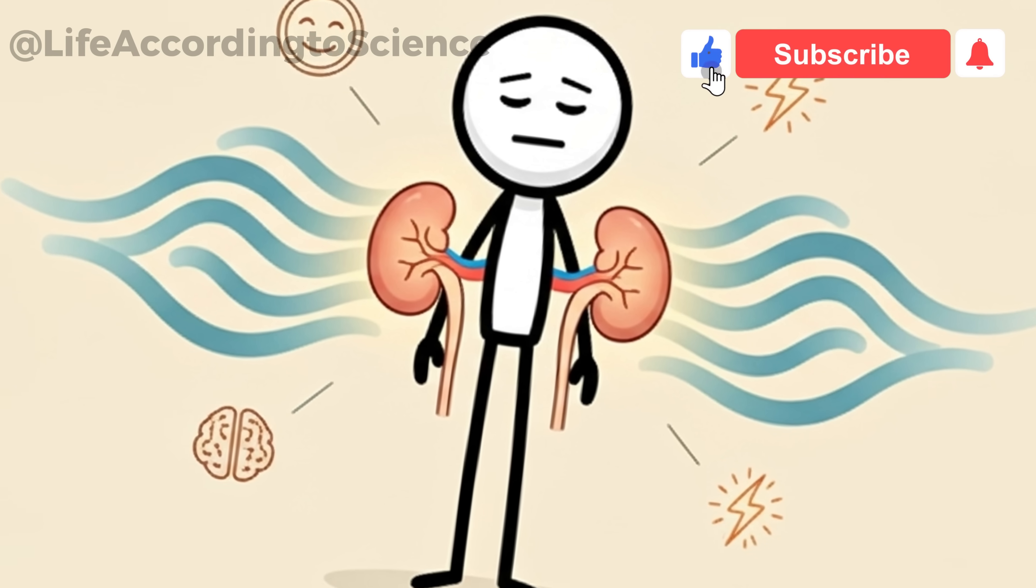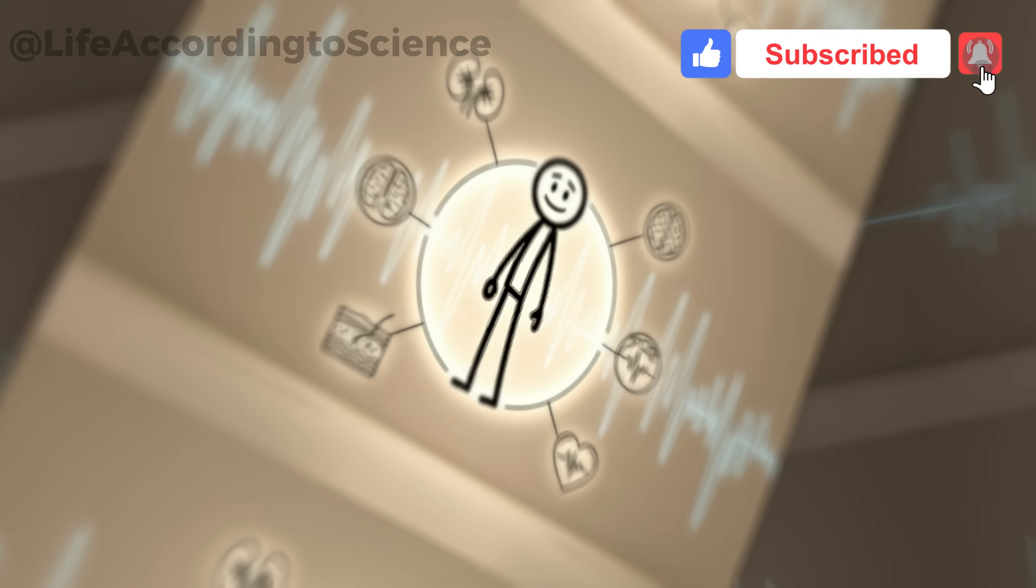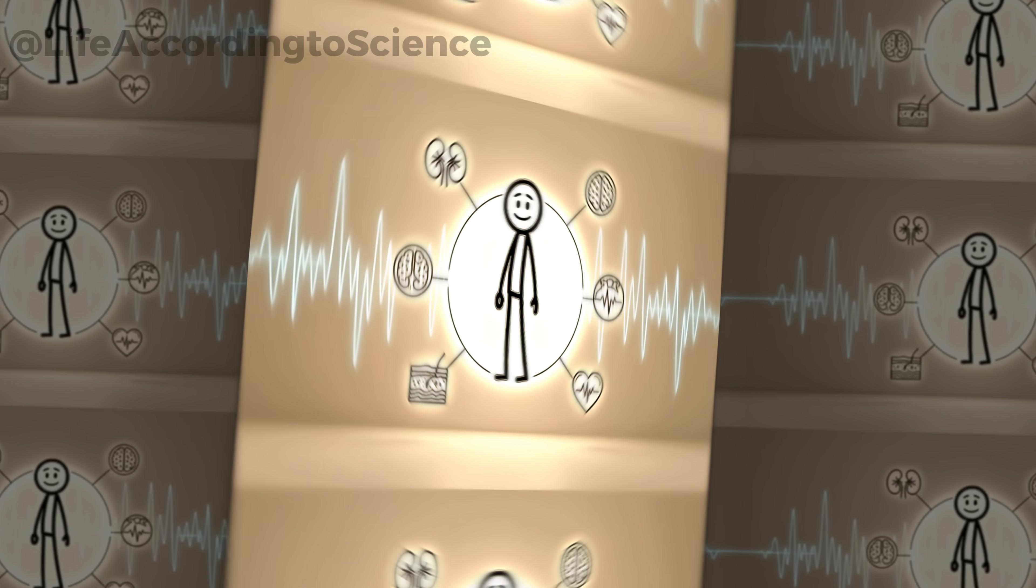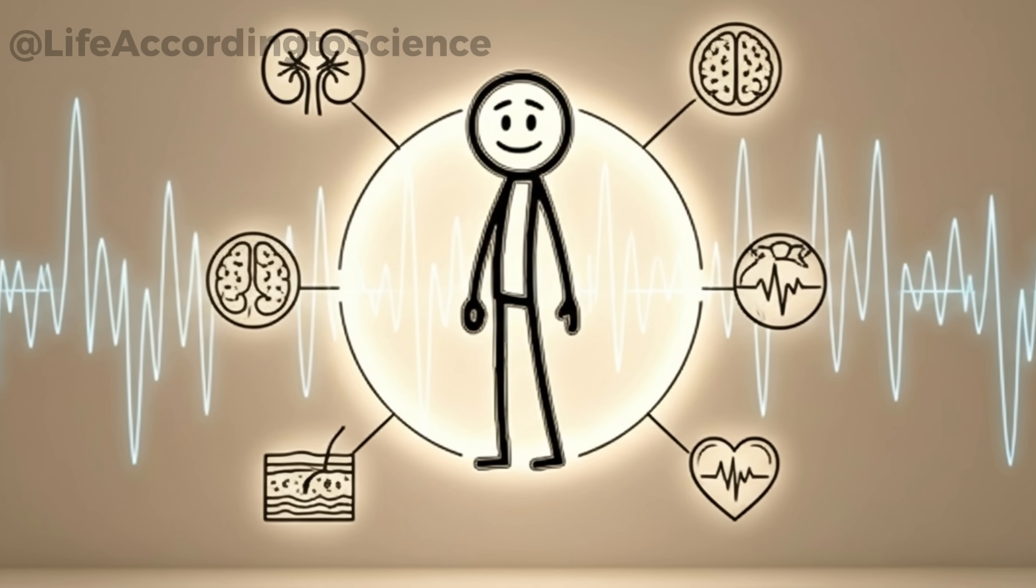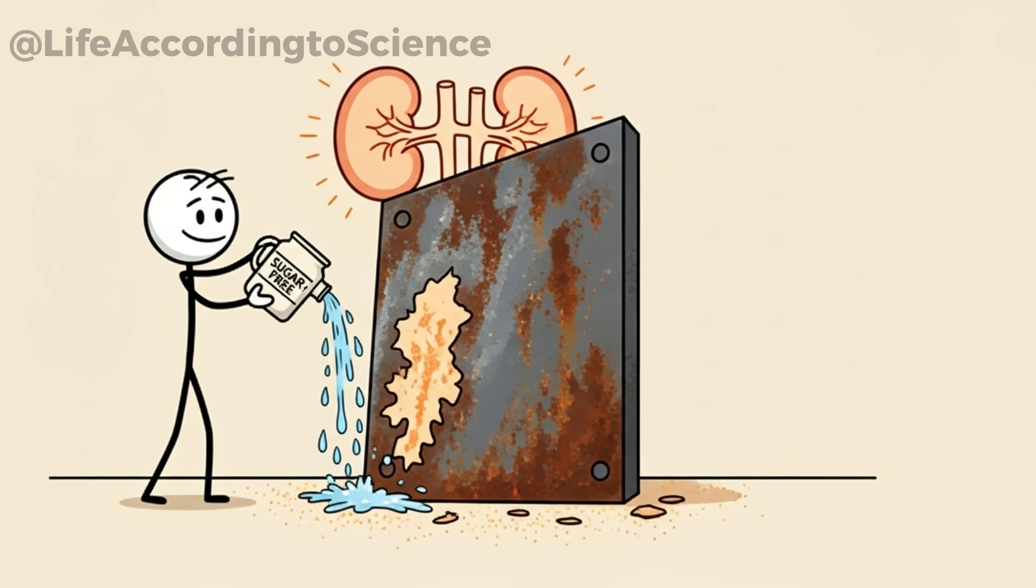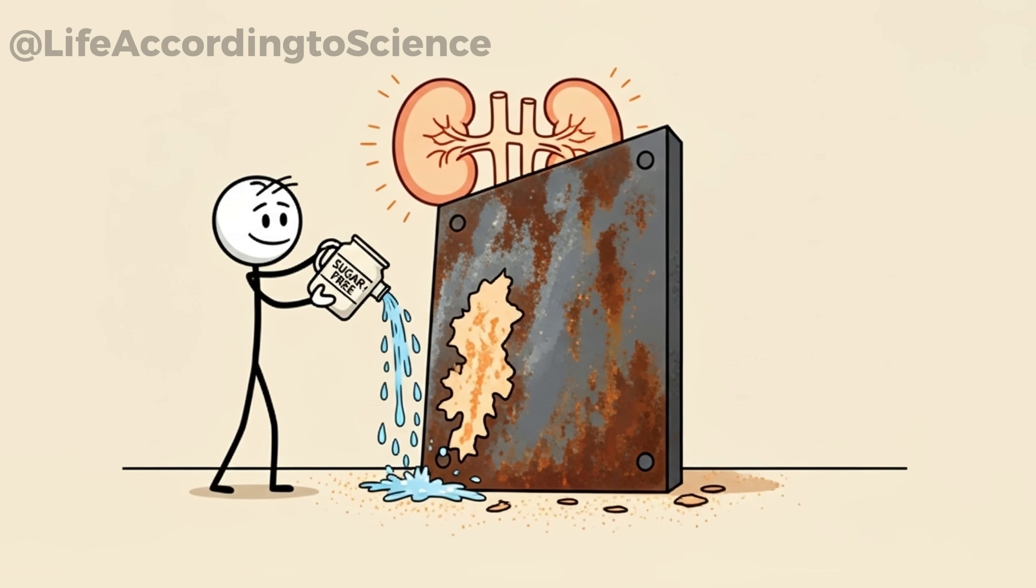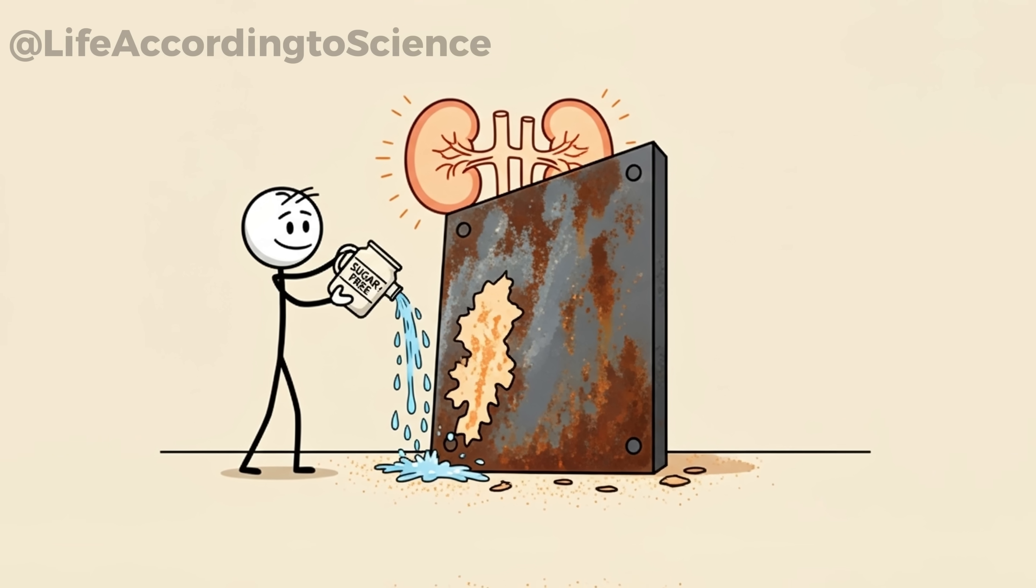This reduction in inflammation also brings side benefits: clearer skin, fewer headaches, and more stable energy. It's proof that kidney health is deeply connected to overall body wellness. Think of inflammation as rust on metal. Removing sugar slows the rusting, giving your kidneys a chance to last longer, stronger, and healthier.